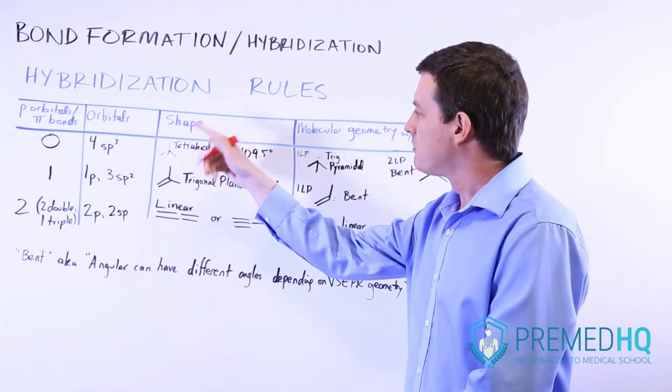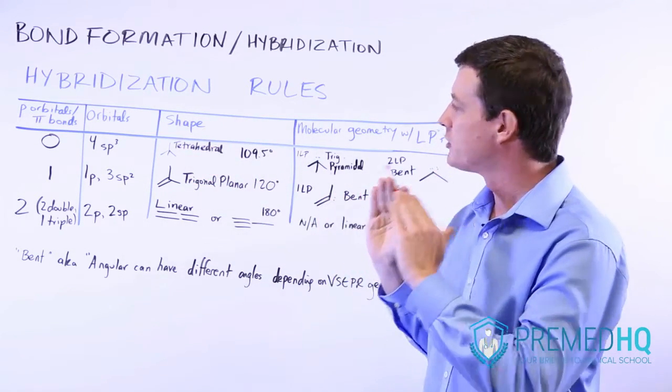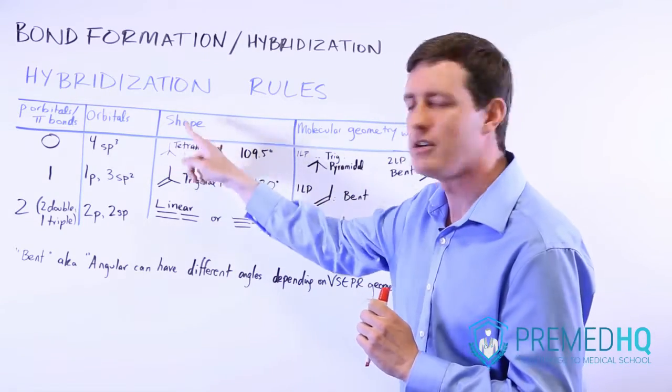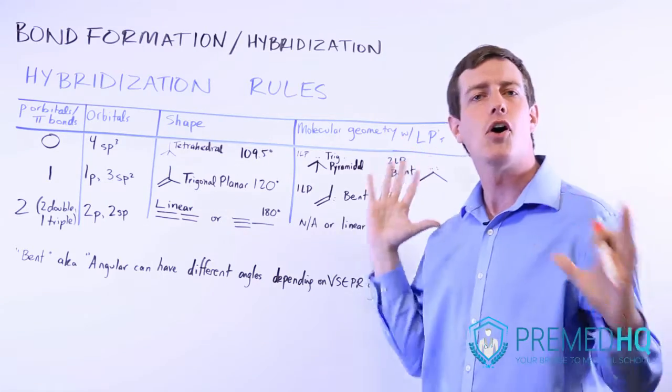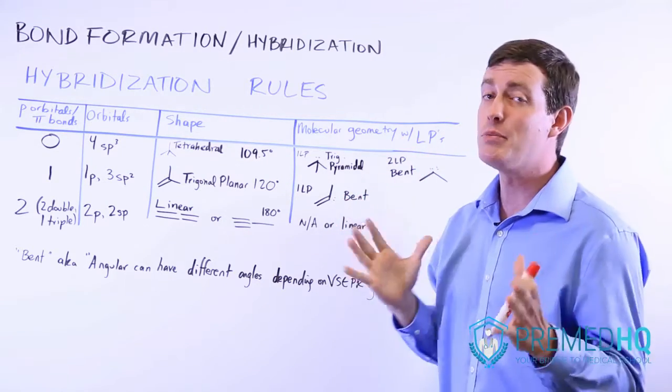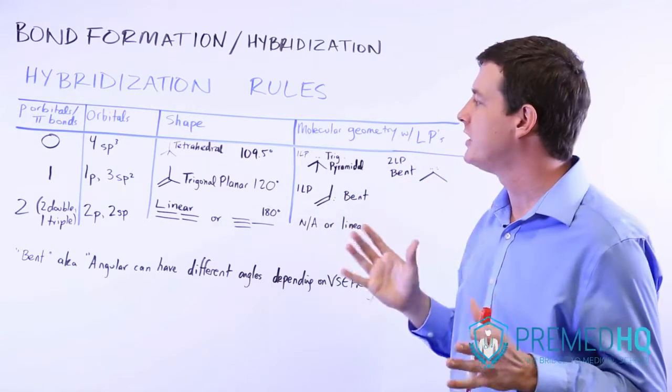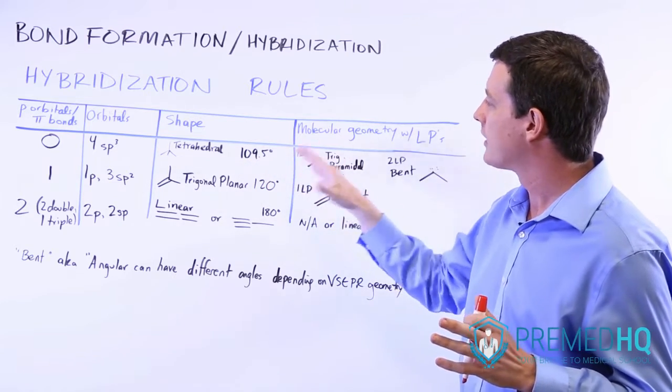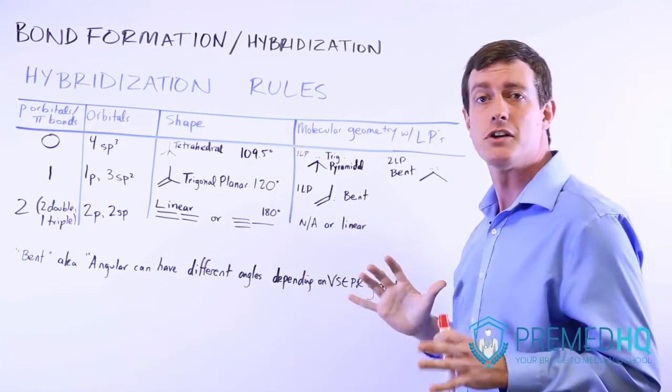The tetrahedral shape has angles of 109.5 and that allows all of the electrons in these different bonding groups to be as far from each other as possible. So be very aware of this tetrahedron and also be aware of the fact that it's 109.5 degrees.